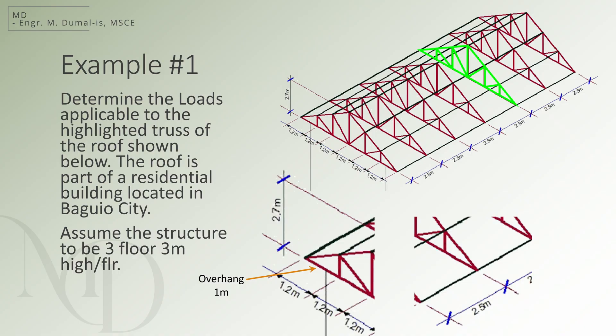Assume the structure to be 3 floors with a height of 3 meters per floor. Here, the structure shown also has its dimensions. The breadth of the roof can be computed as 1.2 times 6 which is equal to 7.2 meters. The length of the entire roof is 2.5 times 6 equal to 15 meters and the height of the roof is 2.7 meters. As per the illustration, the roof has overhangs on both sides equal to 1 meter each.